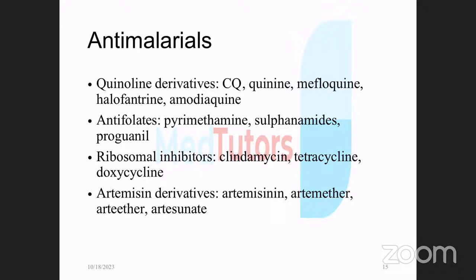There are various classes of antimalarial drugs: quinoline derivatives like quinine, mefloquine, and amodiaquine; antifolates like pyrimethamine, sulfonamides, and proguanil; ribosome inhibitors like clindamycin and tetracycline. The most important ones recently are artemisinin derivatives — artemether, artesunate, and artesunic acid.